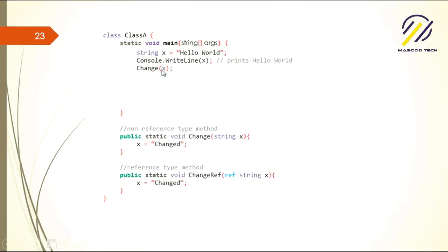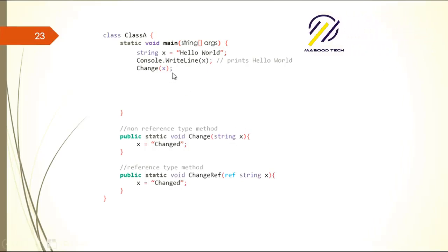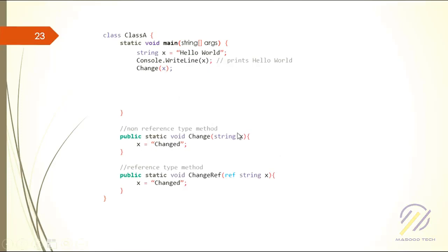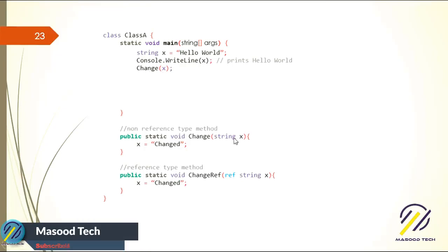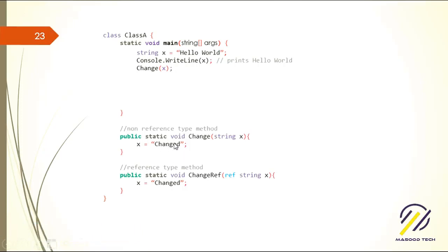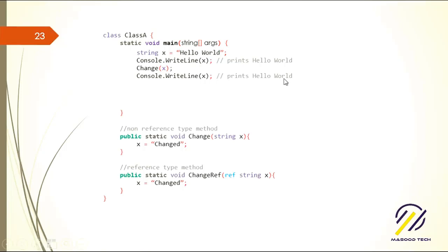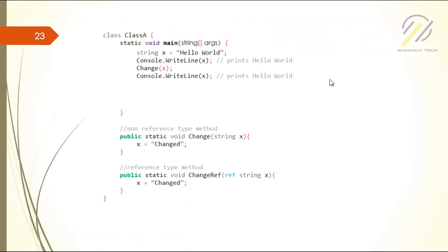The two X variables — one in main and one in the function — are not the same. They exist in different scopes, like two different places that don't know about each other. MSDN says passing X passes it as a reference type, so changing it inside the function should persist. We expect it to print 'changed', but when you run it in Visual Studio, it still prints 'hello world'. That was really puzzling to me.